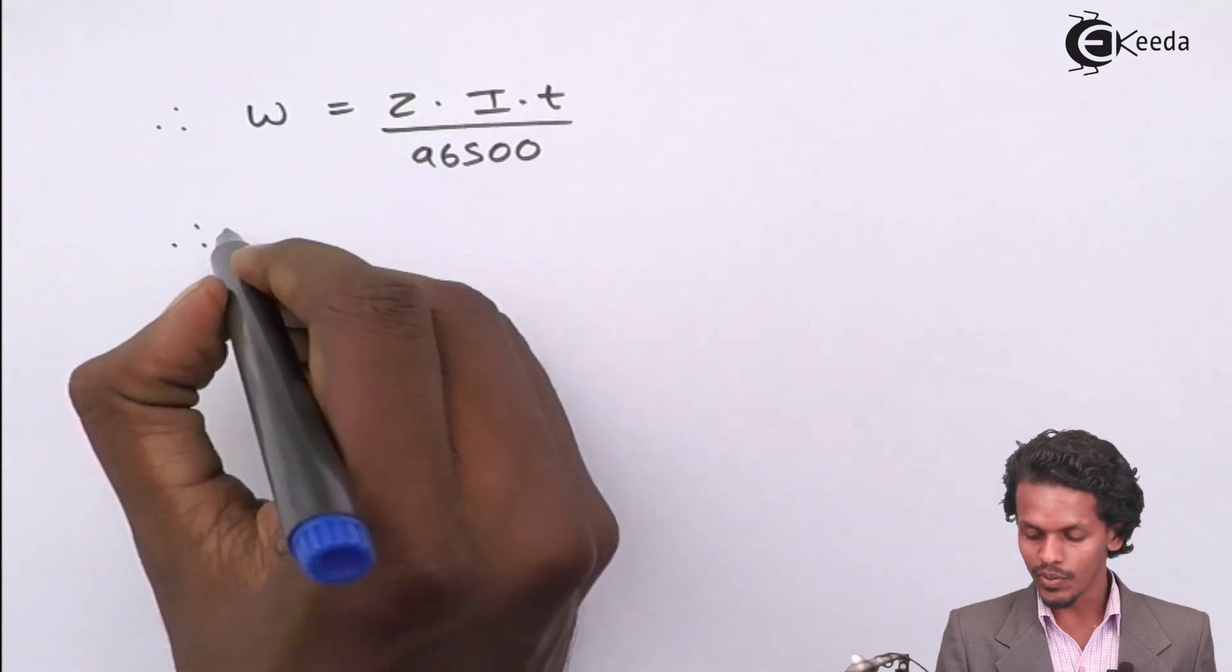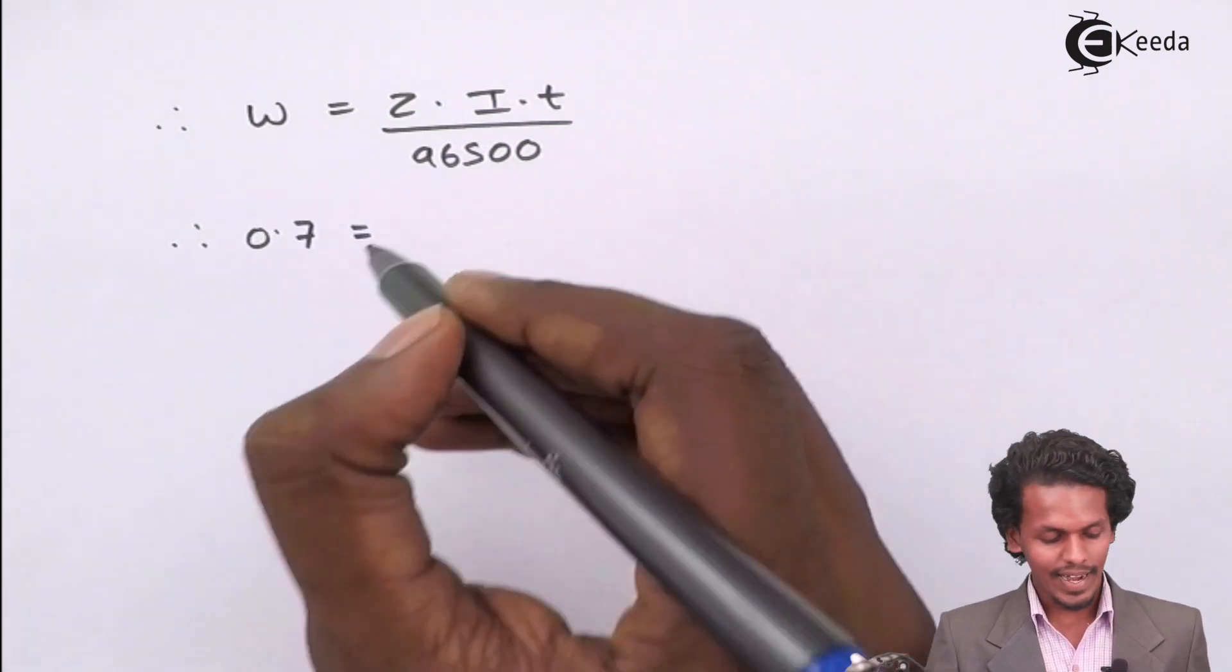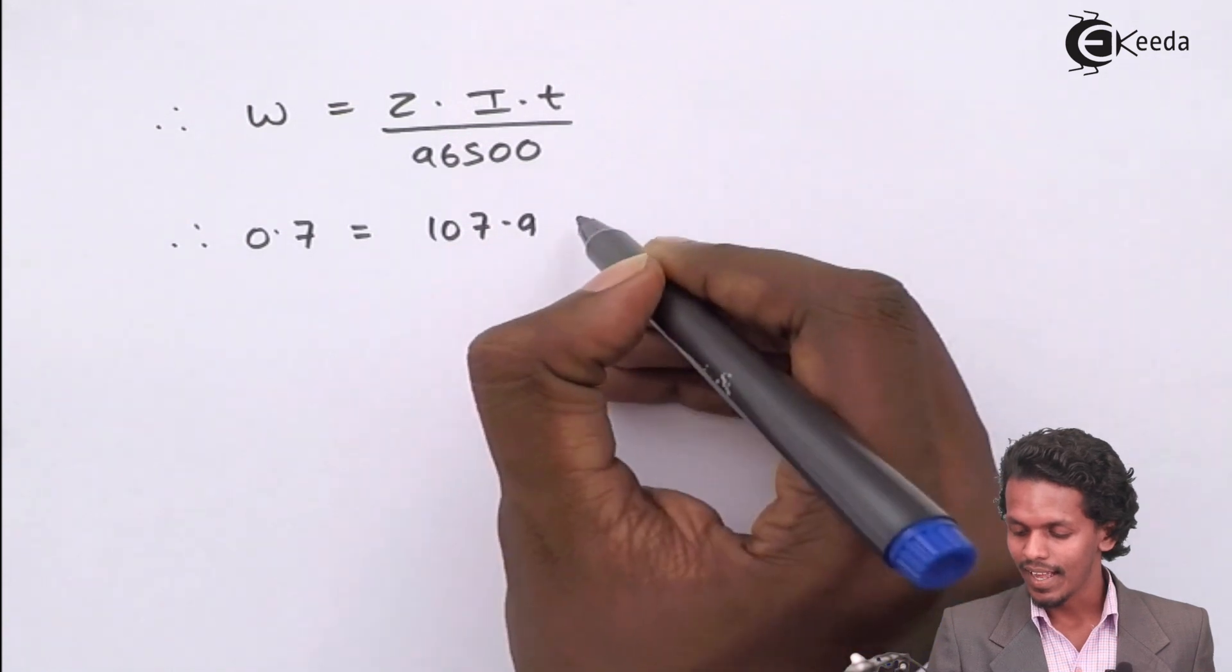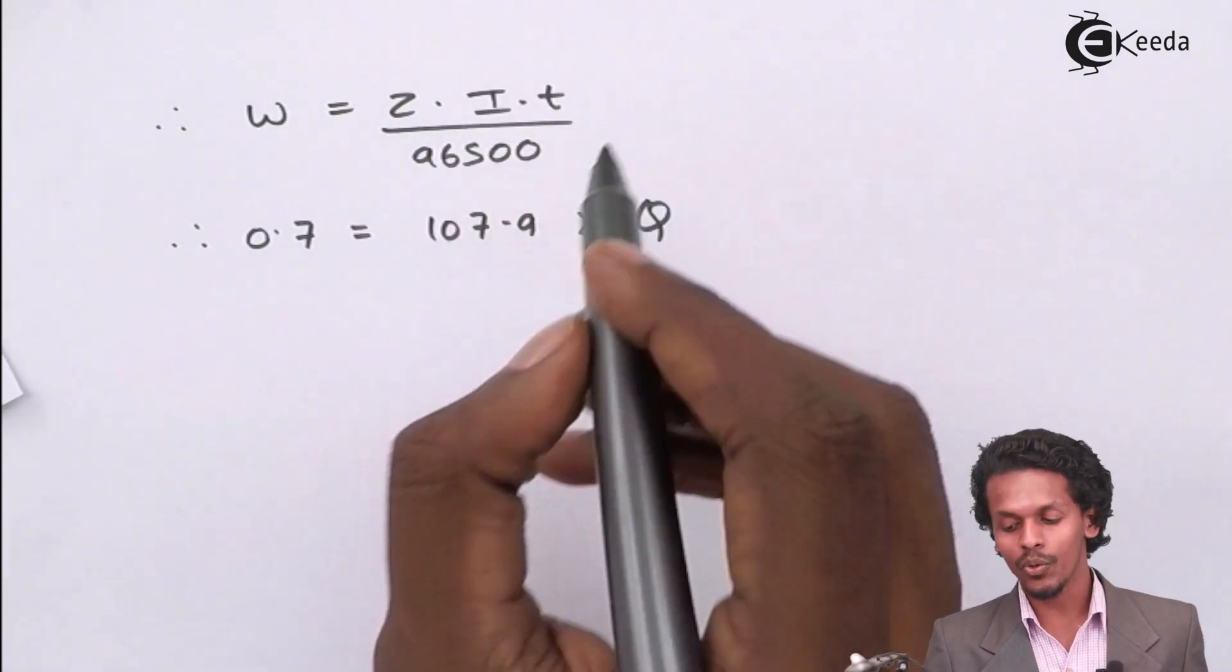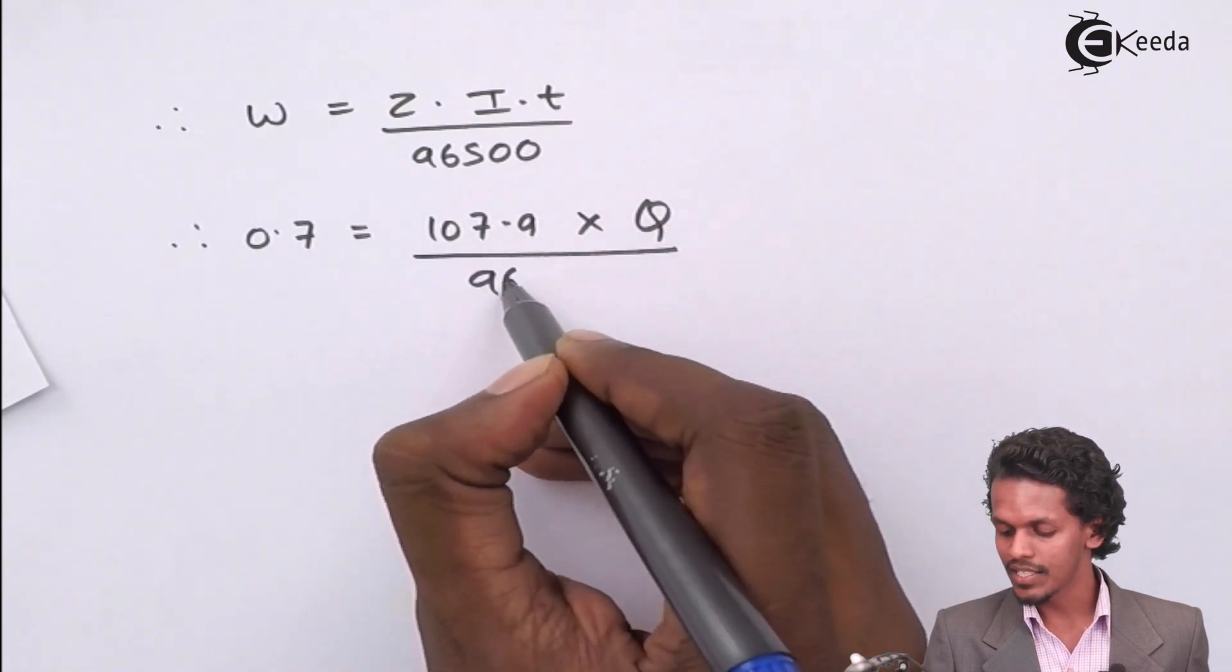Therefore, w provided to us is 0.7, the value of z is 107.9, and q, that is i into t, divided by 96500.